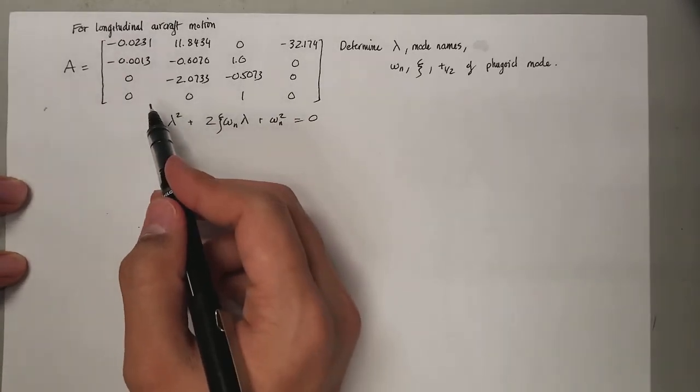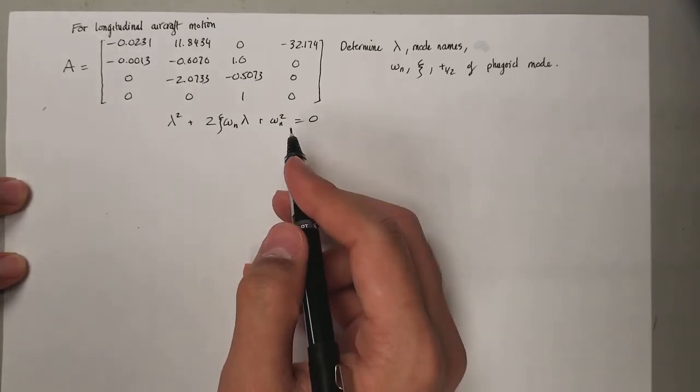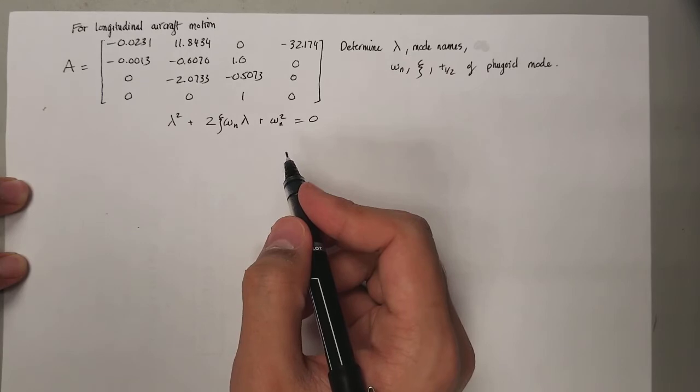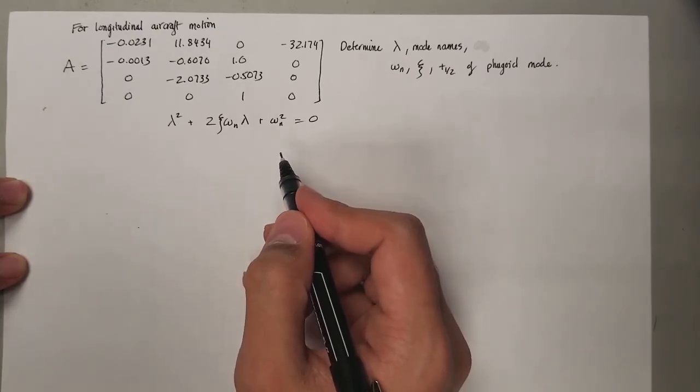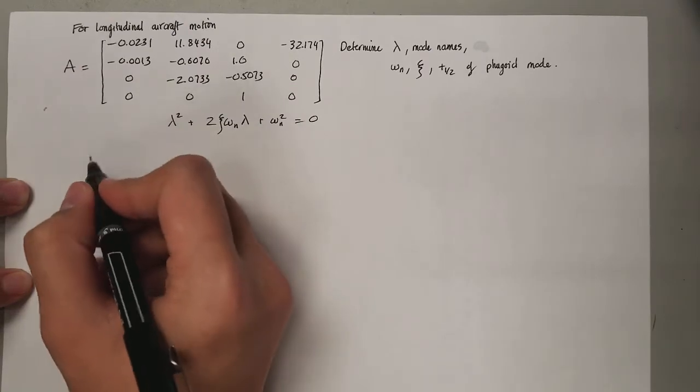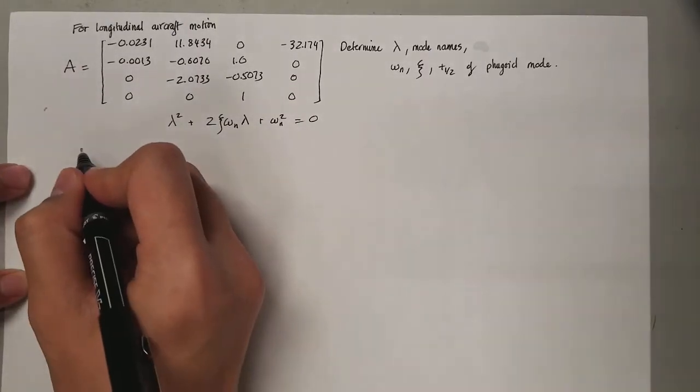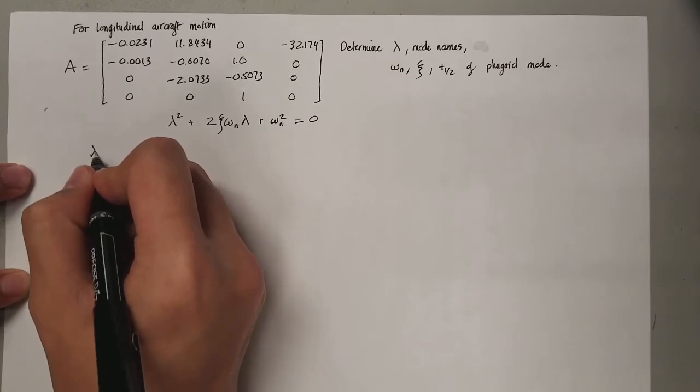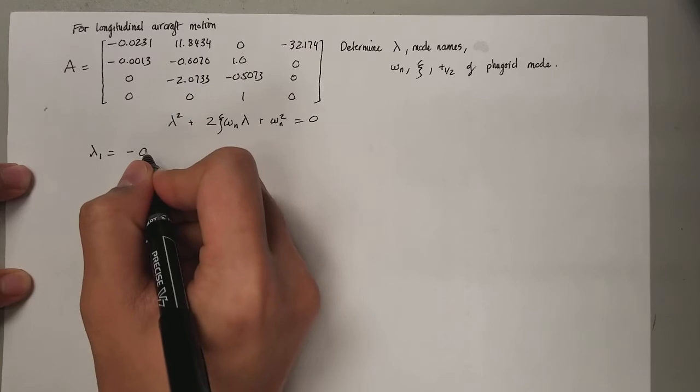If you're given this 4x4 matrix, of course you can solve it by hand but it's gonna take a lot of time, so I would recommend doing it using a calculator or a computer. If you solve for the eigenvalues of the matrix, you'll be able to find out four different eigenvalues.